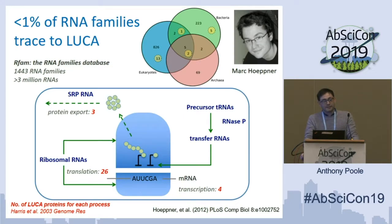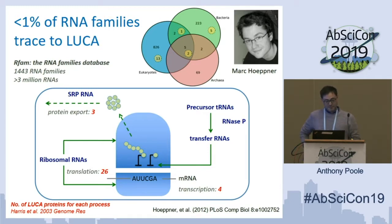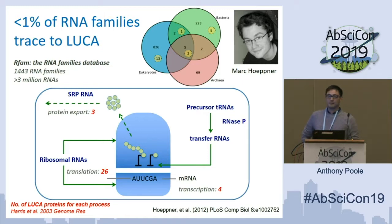Here's just one example from work that we've done. I threw this in because there's a lot of RNA stuff in the meeting, but people have done the same thing for proteins as well. Basically, what we did was we looked at the RFAM database, which is a big database with nearly 1,500 RNA families, and asked how many things appear in more than one domain. And as you can see from this Venn diagram, the numbers are very small.